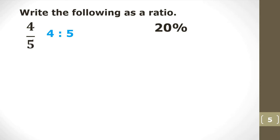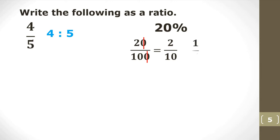Now, 20% — remember, when you talk about percent, it means per 100. So 20% means 20 over 100. If I simplify by dividing both top and bottom by 10, I get 2 over 10. I can simplify further — divide numerator and denominator by 2 (the common factor) — which equals 1 fifth. But we want to write it in ratio form, so therefore 1 fifth is the same as 1 to 5.